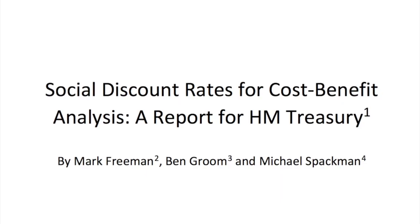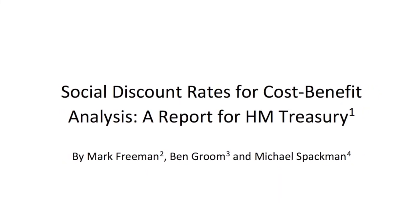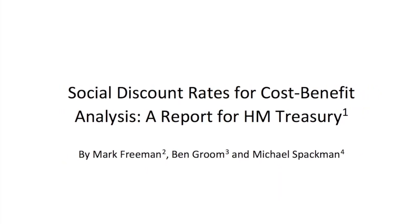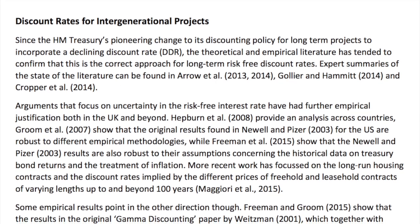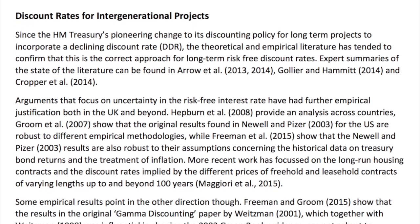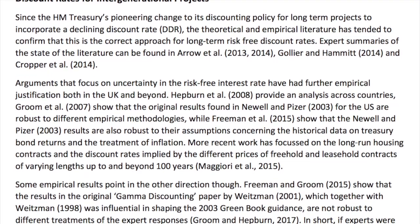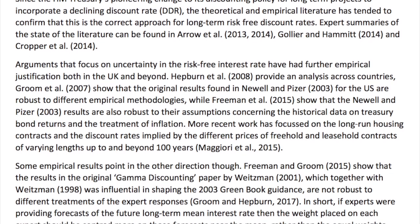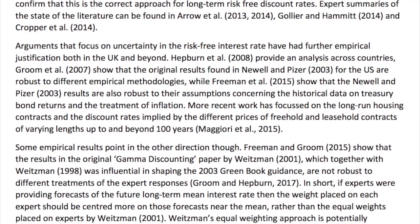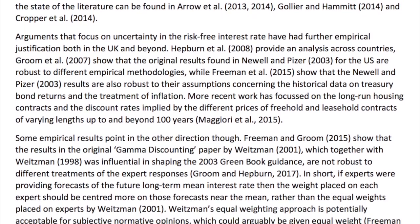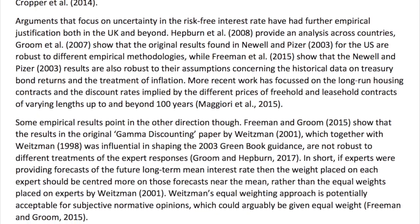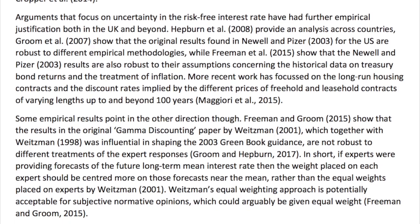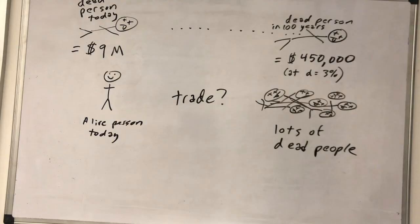The UK has actually taken this into account, using different discount rates for short-term and long-term analyses in governmental cost-benefit analyses. We don't do that in the US, in part because it leads to time inconsistencies in policy choices. But we'll leave this discussion there so you have some reason left to go to graduate school.